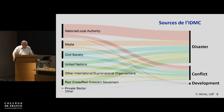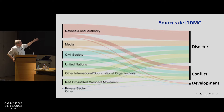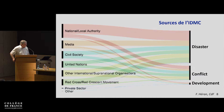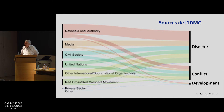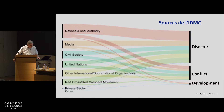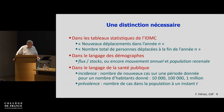They combine a vast spectrum of sources — from national and local authorities, media, civil society, NGOs, international organizations, the Red Cross and Red Crescent, and the private sector. This is a really quite impressive effort to collect information about the existence and magnitude of catastrophic events.